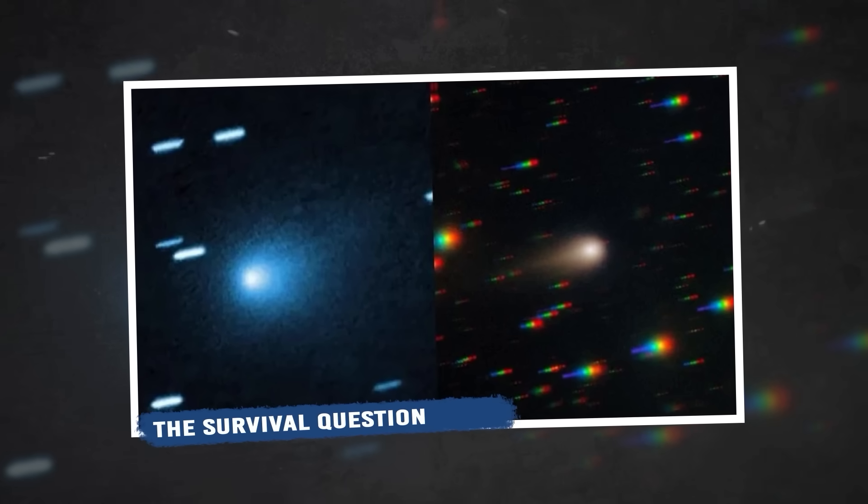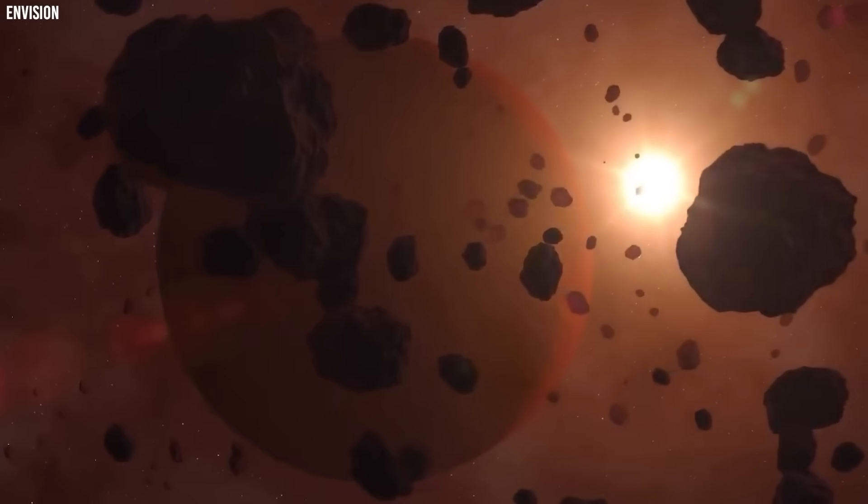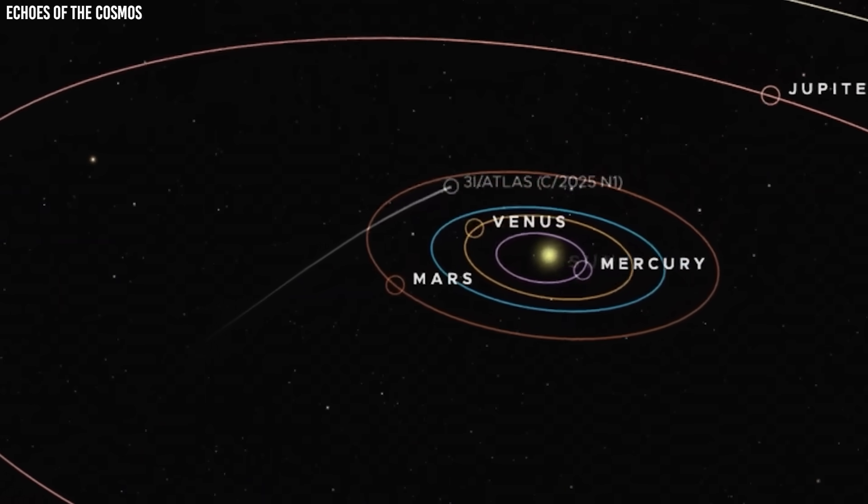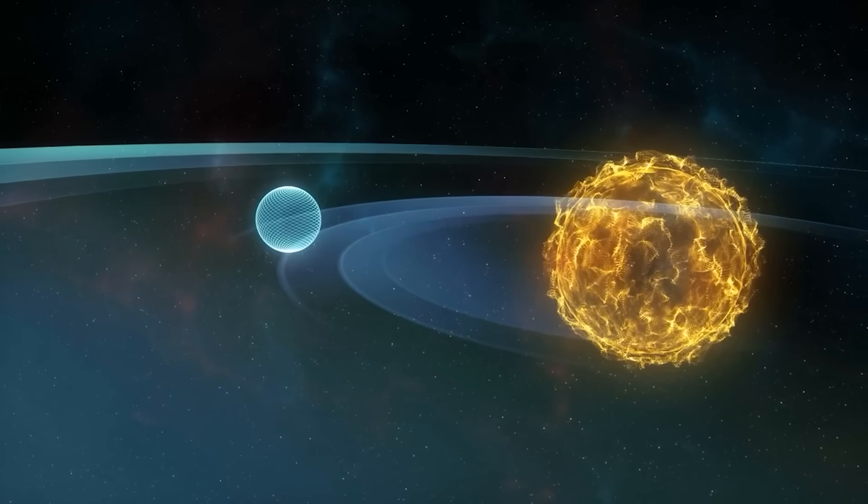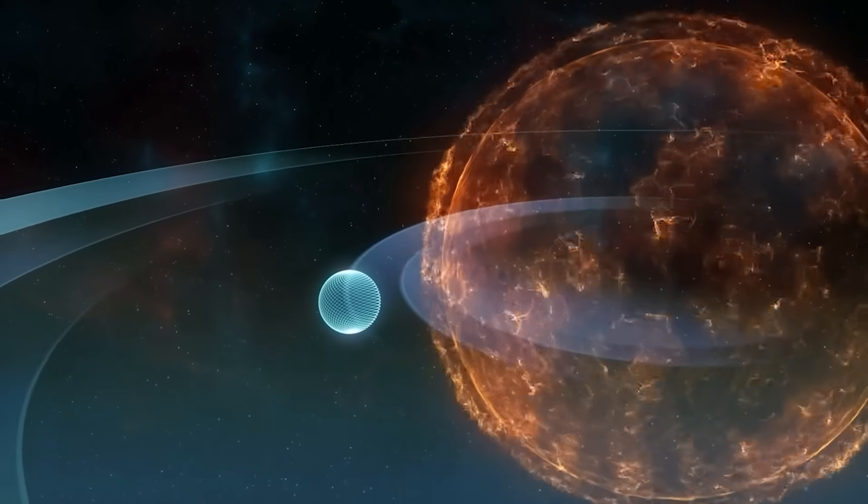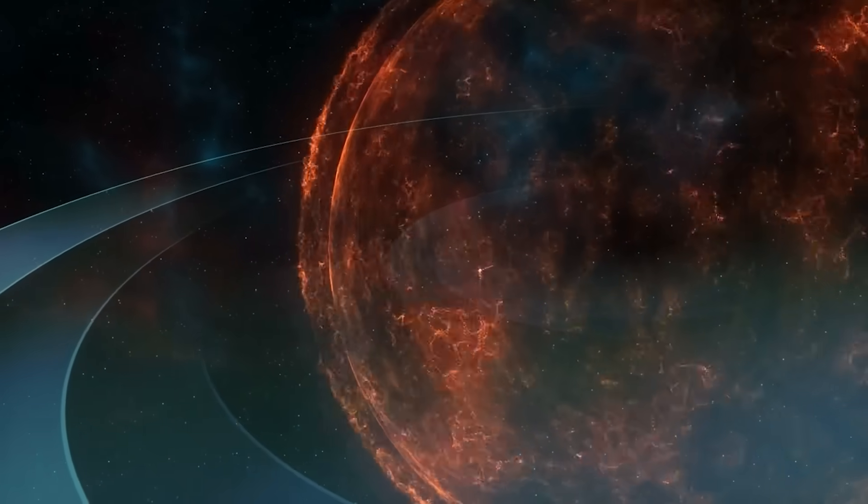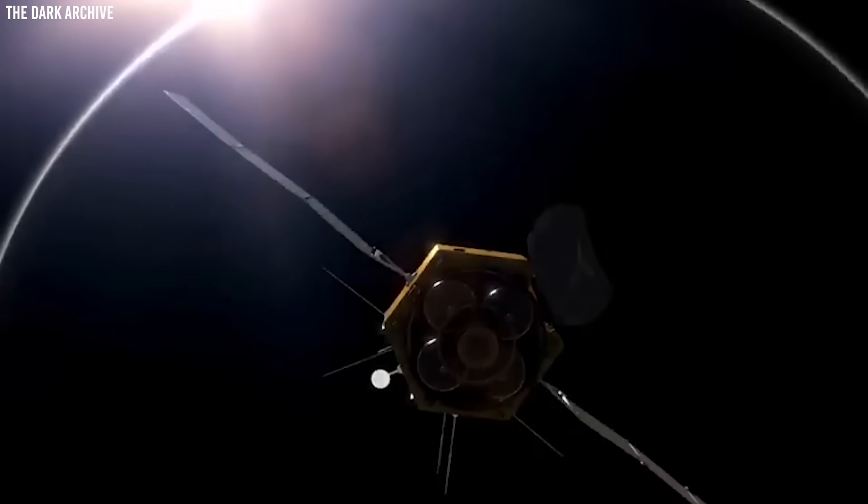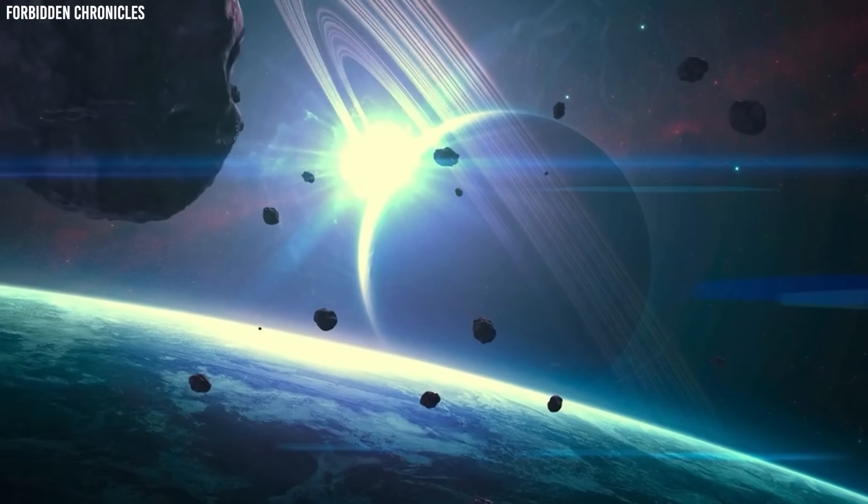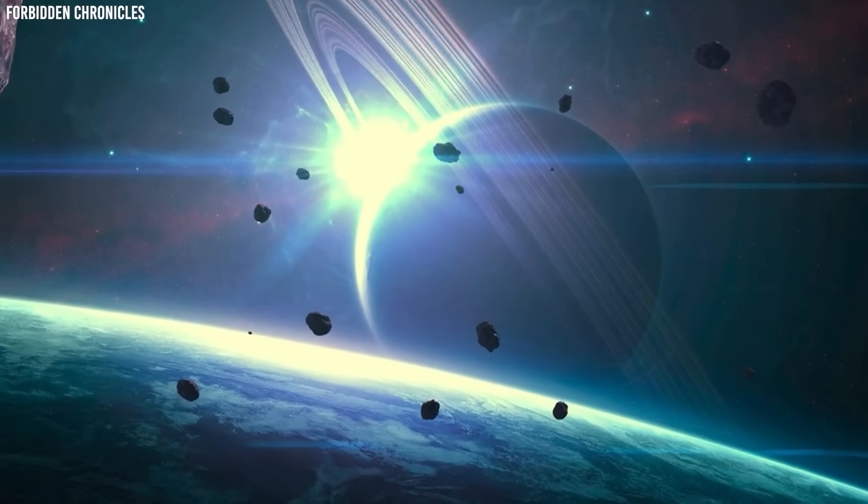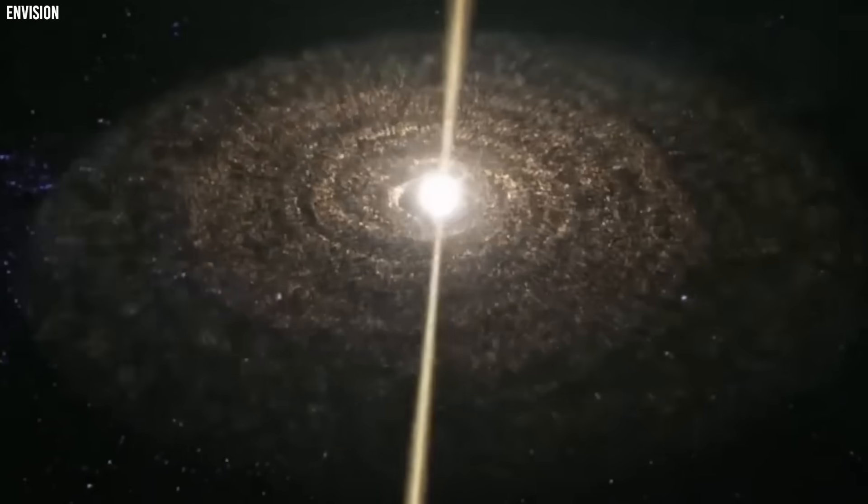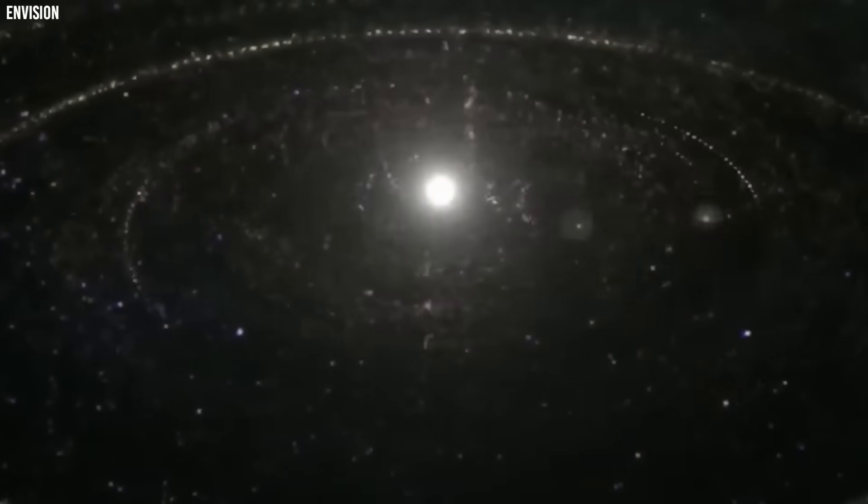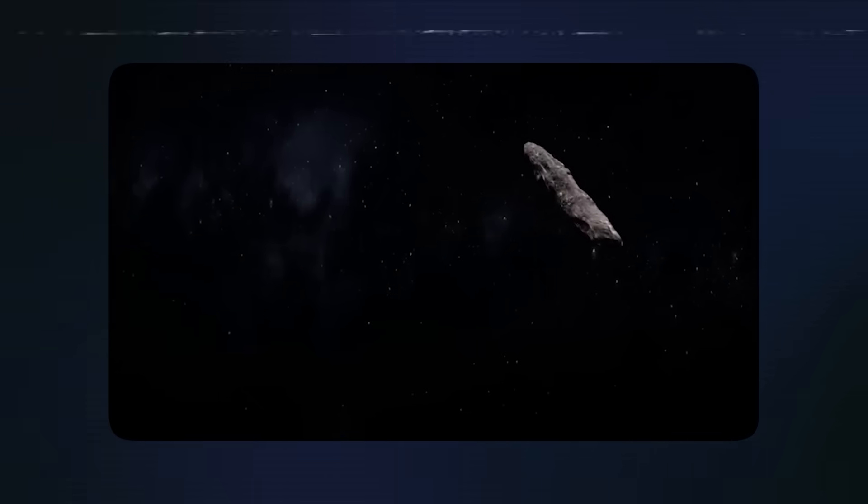The Survival Question. Not all comets make it through their journey around the Sun in one piece. When a comet gets too close to our star, several things can go wrong. The Sun's gravity can literally tear it apart if the comet isn't held together strongly enough. The rapid heating and cooling can cause the nucleus to crack like a rock thrown into a fire. Sometimes comets start spinning so fast from all the gas shooting out of them that they fly apart like a broken pinwheel.